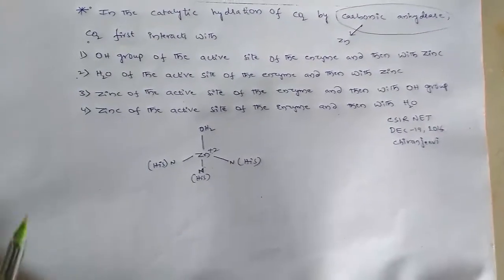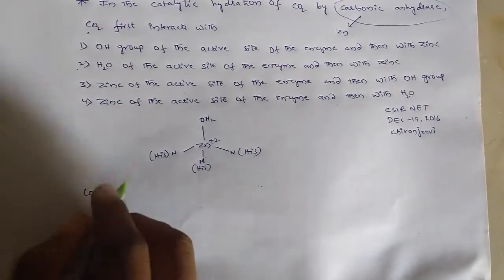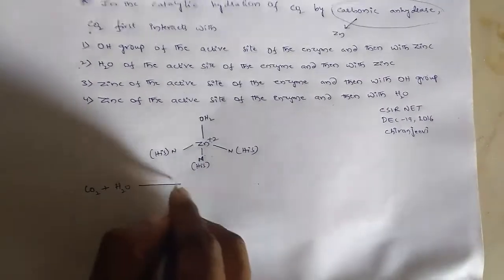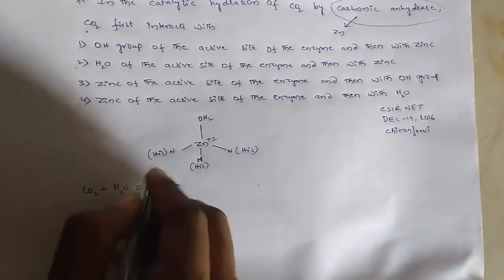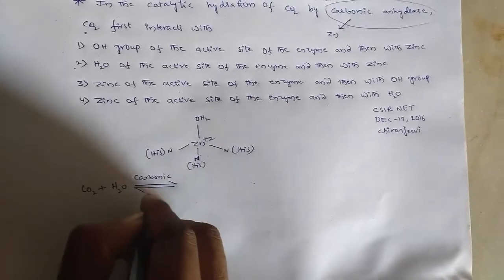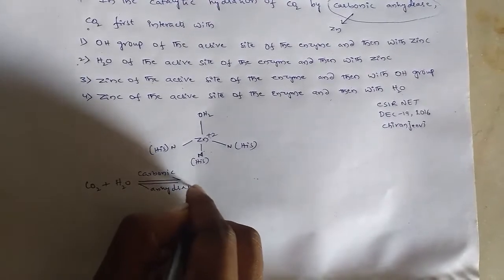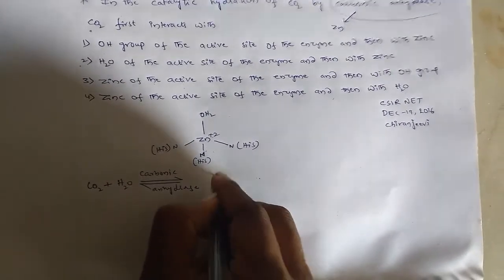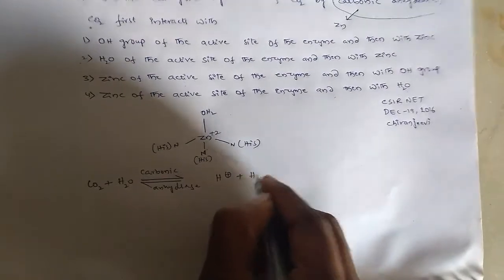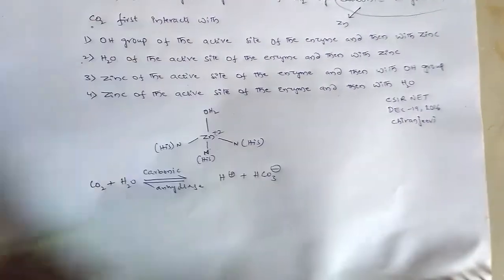This carbonic anhydrase, when it reacts with carbon dioxide and water in a reversible reaction, it converts carbon dioxide into bicarbonate.